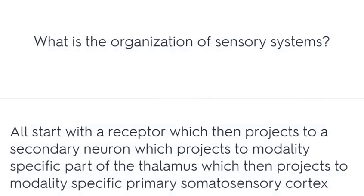What is the organization of sensory systems? It starts with a receptor which projects to a secondary neuron, which projects to a modality-specific part of the thalamus, which then projects to the modality-specific primary somatosensory cortex.